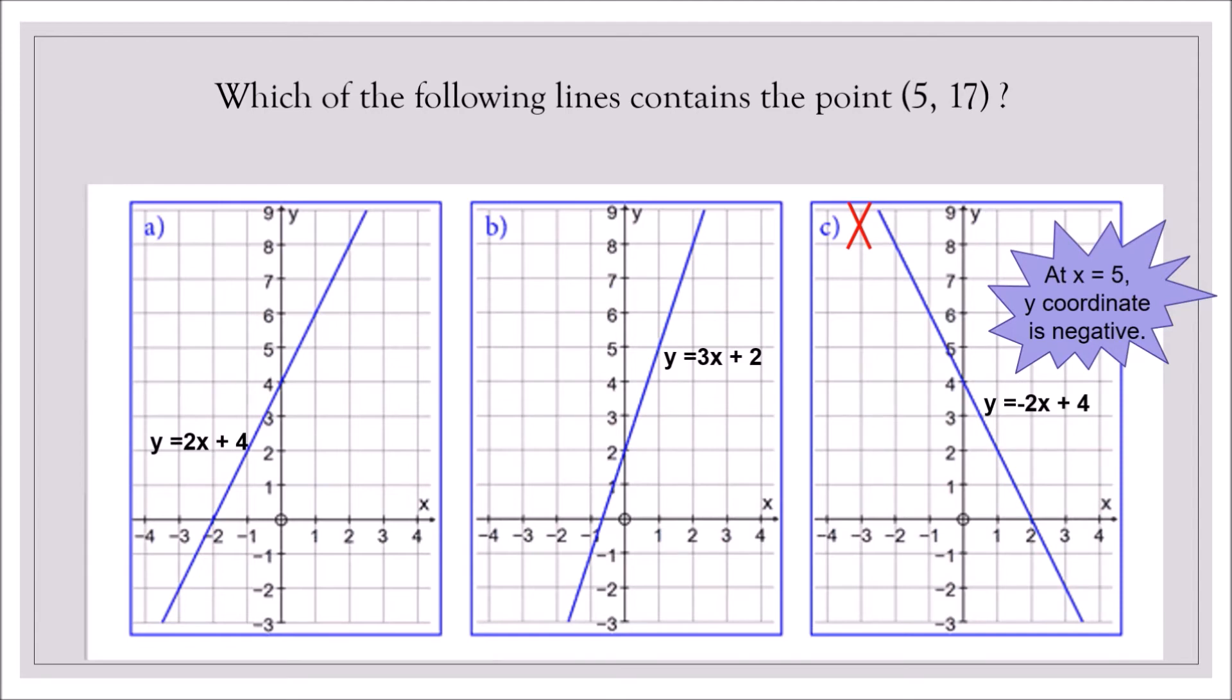Let's look at choice A. The equation of the line is 2x plus 4. What we will do is to substitute the x value on this equation and find if we have the given y value. From our given point 5, 17, the x is 5 and y is 17. So let us substitute 5 into the equation y equals 2x plus 4. So we will have y equals 2 times 5 plus 4. 2 times 5 is 10 plus 4, that's 14. It's not 17. So cross out choice A.